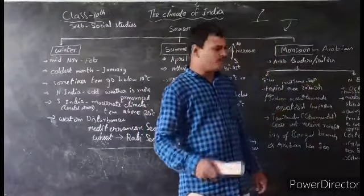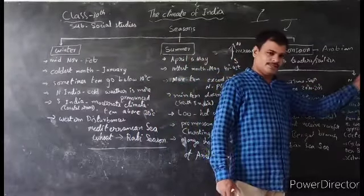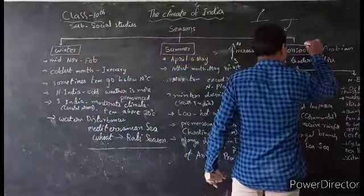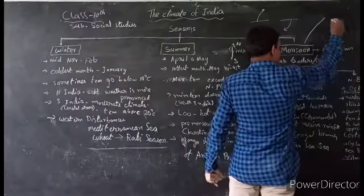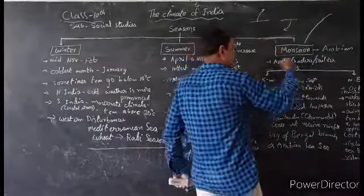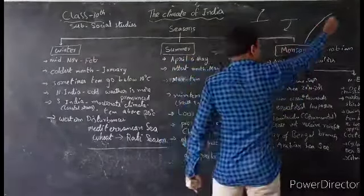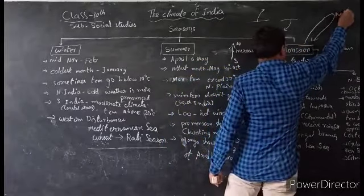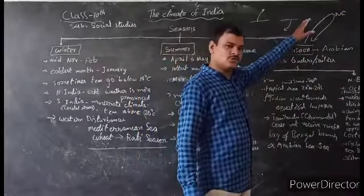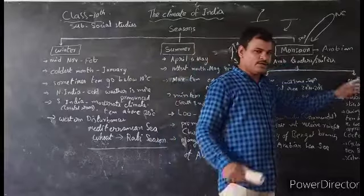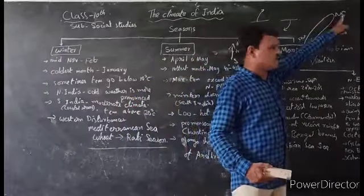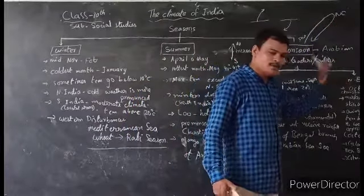Northeast monsoons have a period of October to November — they are retreating monsoons. By the end of October, due to pressure changes between the Indian subcontinent and Indian Ocean, the winds change their direction. They start blowing from the northeast, so they are called Northeast monsoons.